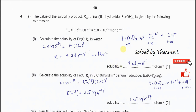Question 4a. The solubility product of iron 3 hydroxide is given, which is this value, and the Ksp expression is also given. Part 1: calculate the solubility of iron 3 hydroxide in water.